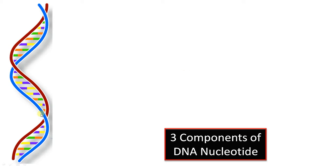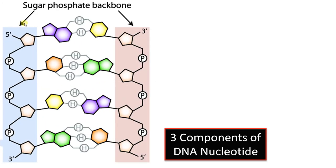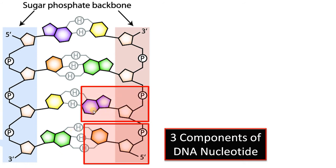This is a double-stranded DNA. Each strand is made up of nucleotides joined by phosphodiester bonds. So this is the first nucleotide and this is the second nucleotide. These two are joined by a phosphodiester bond.